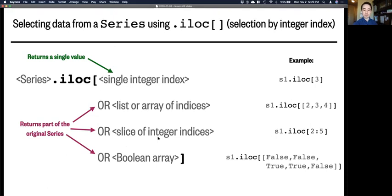And lastly, we can also use a boolean array or an expression that evaluates to a boolean array, similar to NumPy. In this case, false, false, true, true, false.